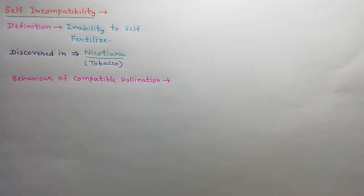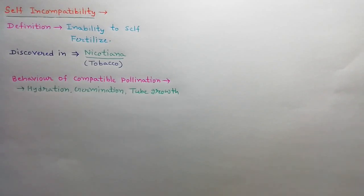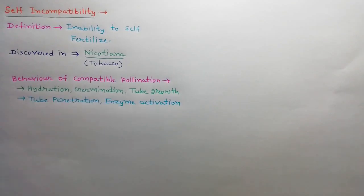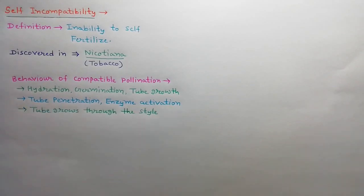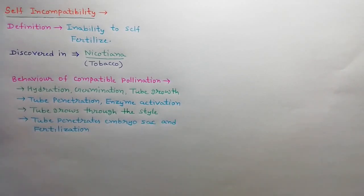Behavior of compatible pollination can be described in four steps. First, pollen grains touch down on the stigma. Then hydration, germination and tube growth occurs; pollen tube penetrates the stigma and cuticle-hydrolyzing enzymes are activated. After penetration, the pollen tube grows through the style and reaches the ovary. Inside the ovary, the pollen tube penetrates the embryo sac and fertilization takes place.